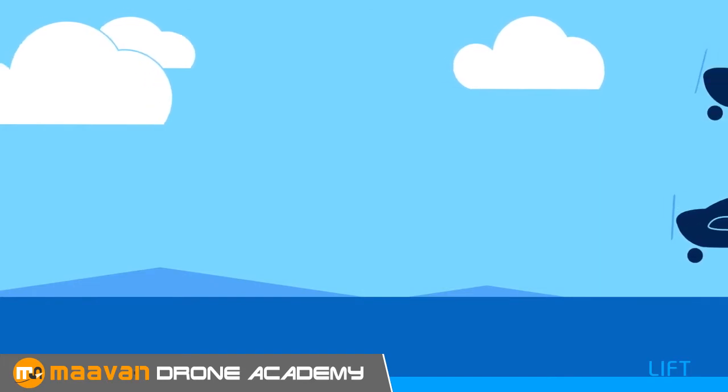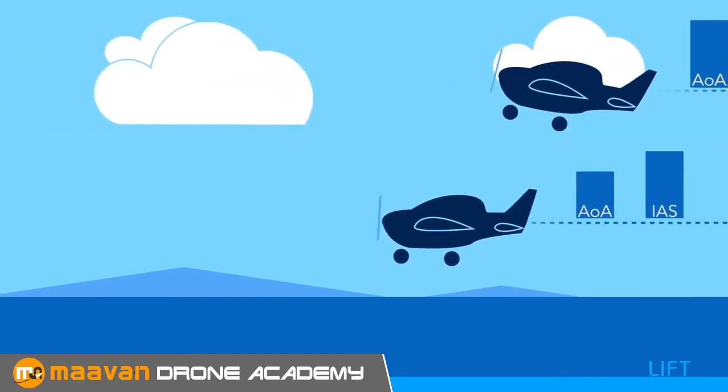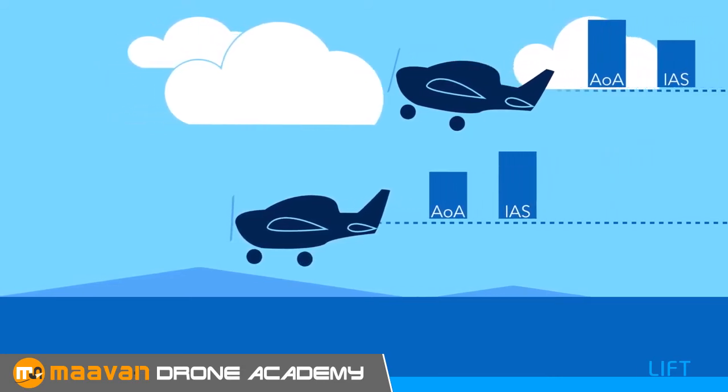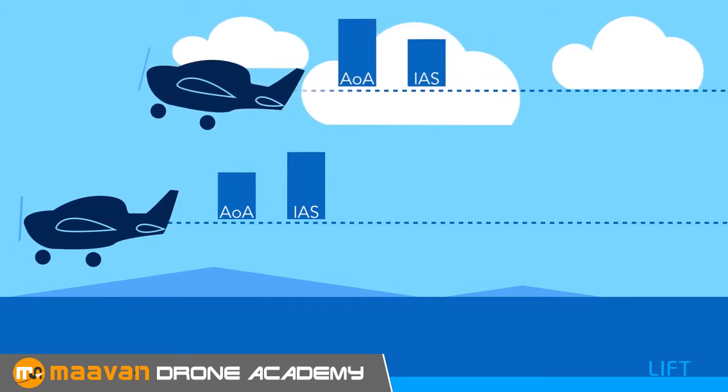So in this example, both aircraft are producing the same amount of lift and both are maintaining level flight. The aircraft on top has a higher angle of attack, thus slower airspeed, than the aircraft below, which has a lower angle of attack, but faster airspeed.